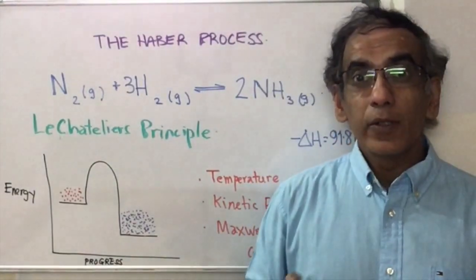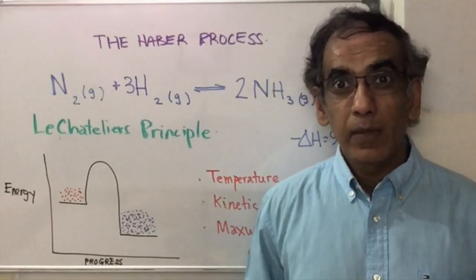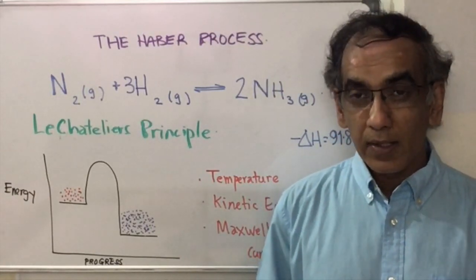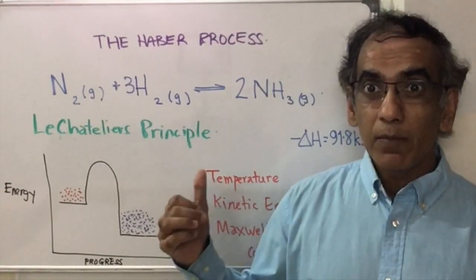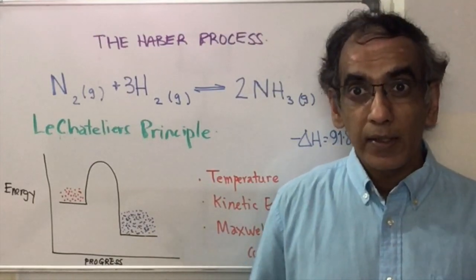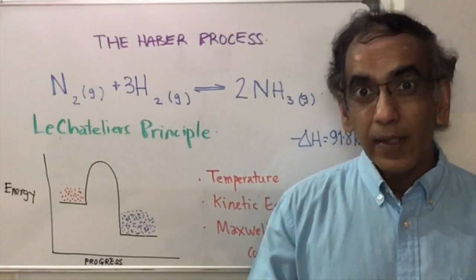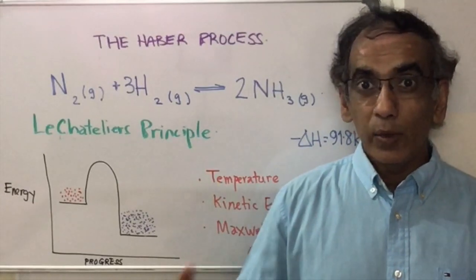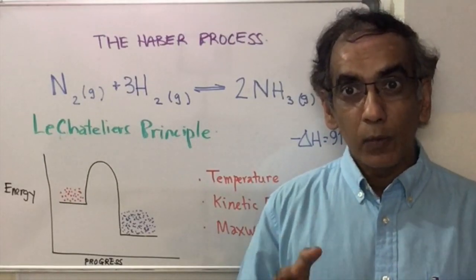Hello and welcome again. Today I want to speak to you about the Haber process. It's one of the most talked about reactions in the chemistry class. You would have heard about the Haber process for the manufacture of ammonia, and it happens to be one of the most important reactions in modern day human civilization. It manufactures ammonia, which is the precursor for making ammonium phosphate, ammonium nitrate, and lots of artificial fertilizers which are responsible for feeding the world.